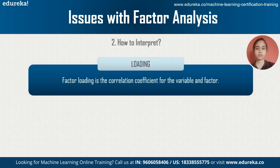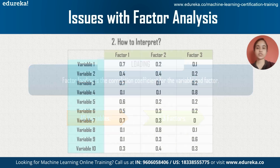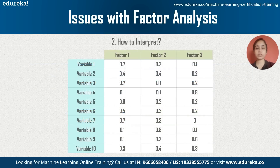To interpret results, we use factor loadings. Factor loading is the correlation coefficient between a variable and a factor — it shows the variance explained by the variable on that particular factor. For example, with 10 variables reduced to three factors, you build a table accounting for how much variance of each variable is explained by each factor. It ranges from zero to one; if a significant amount of correlation is explained by a factor, the variable can be represented by that factor.